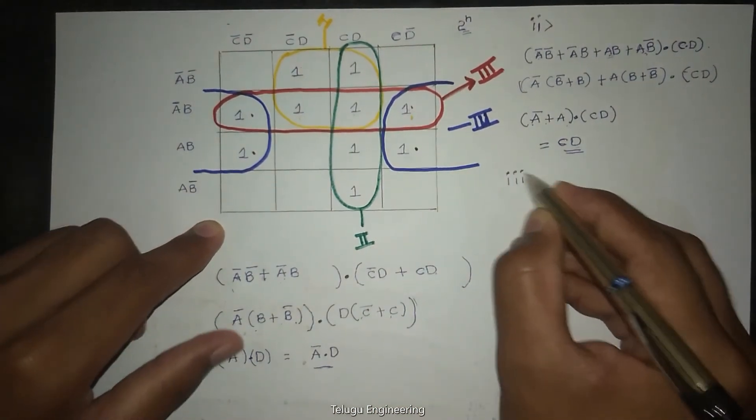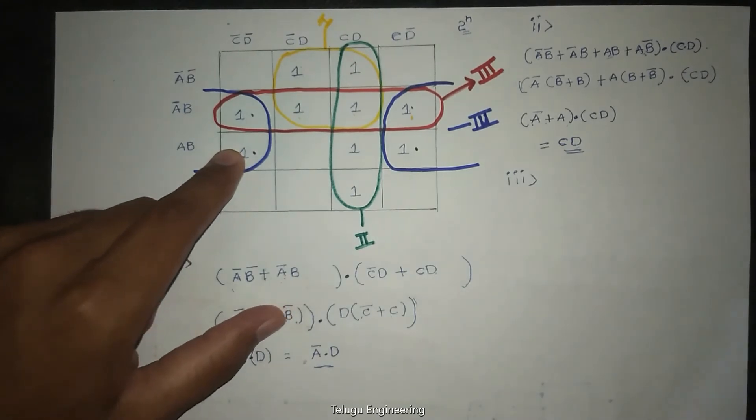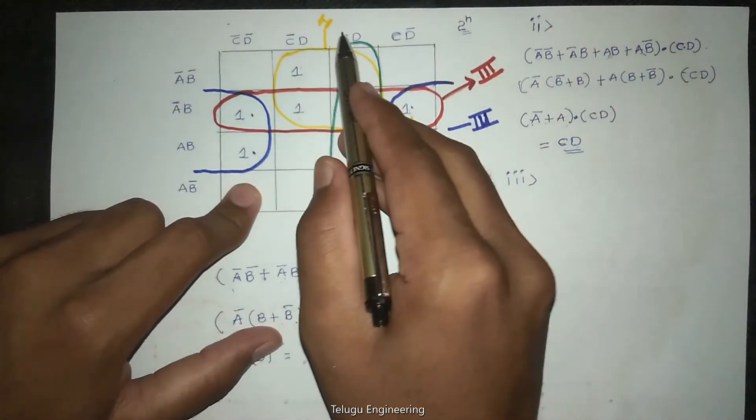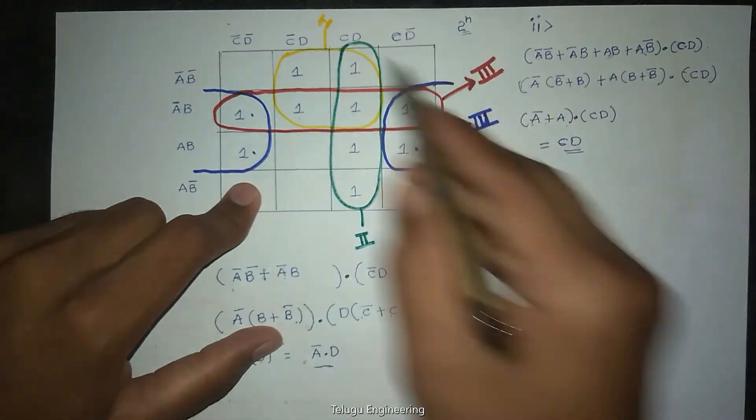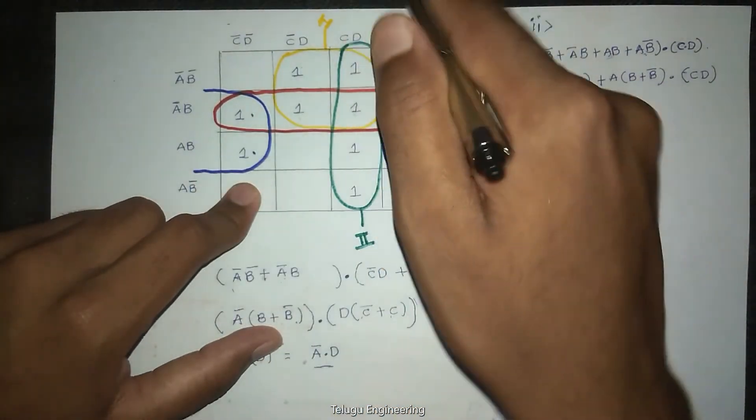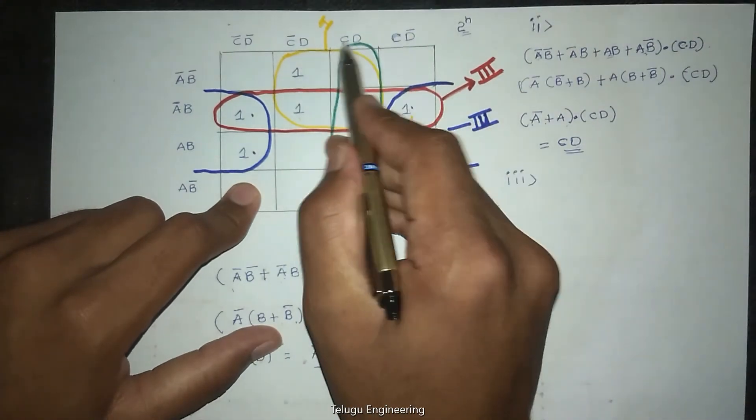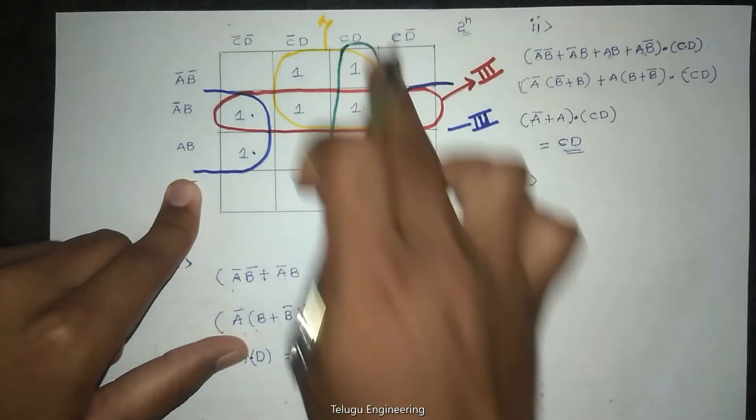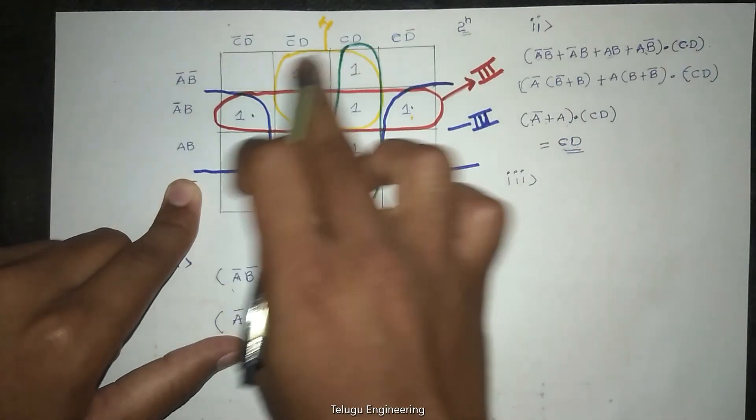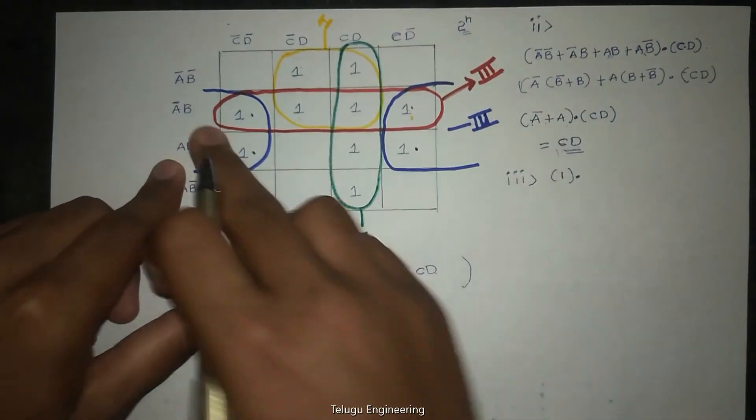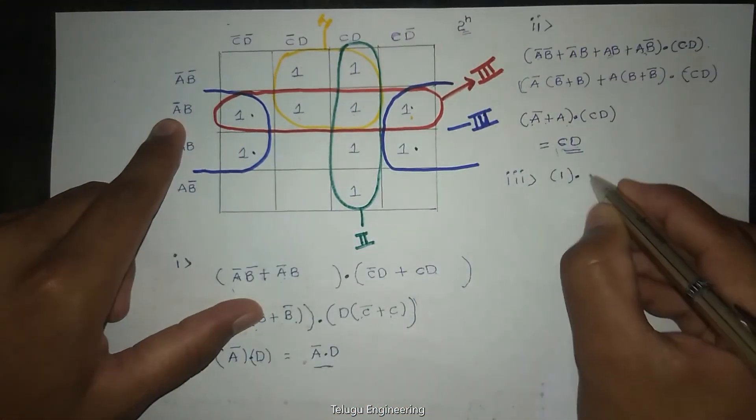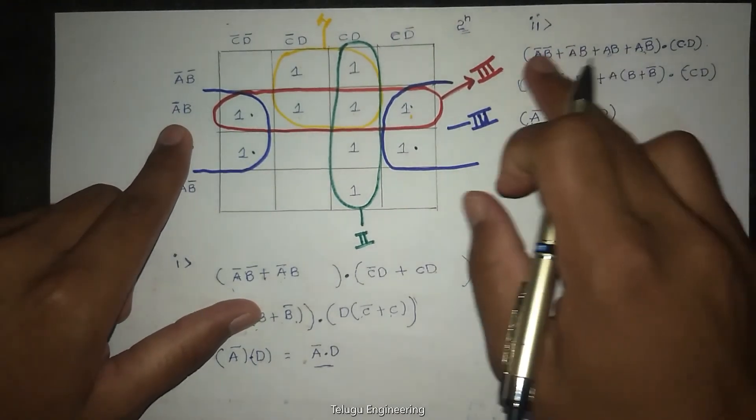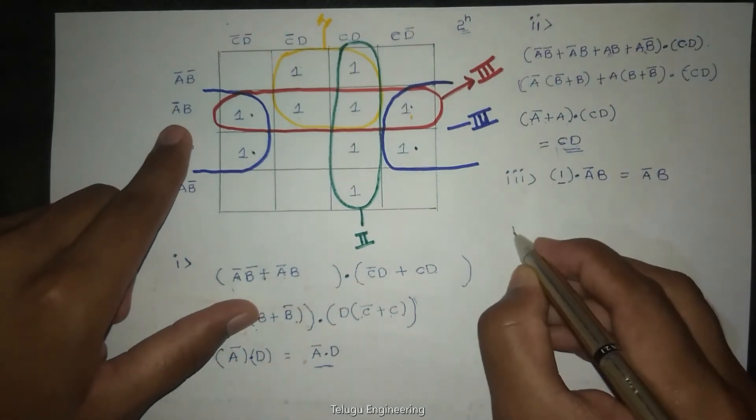And next third group. You can use simple technique. This group involves A bar and B, so that is A dot product with A bar plus B. A bar plus B equals A bar B. So it is one equation. You can solve it yourself.